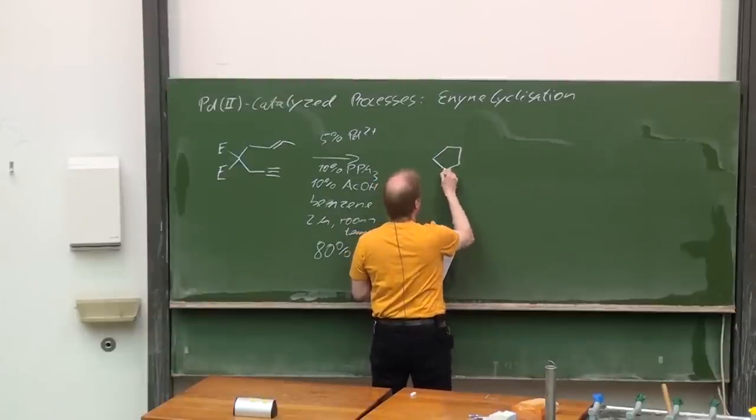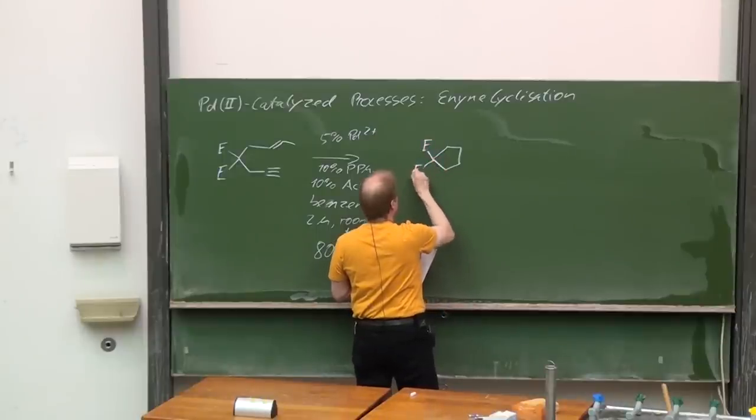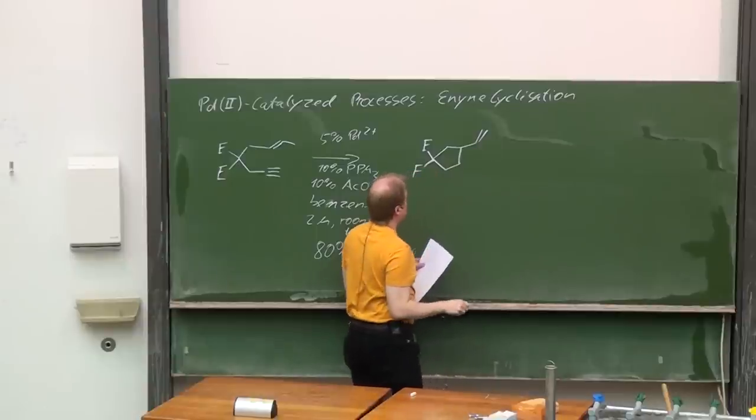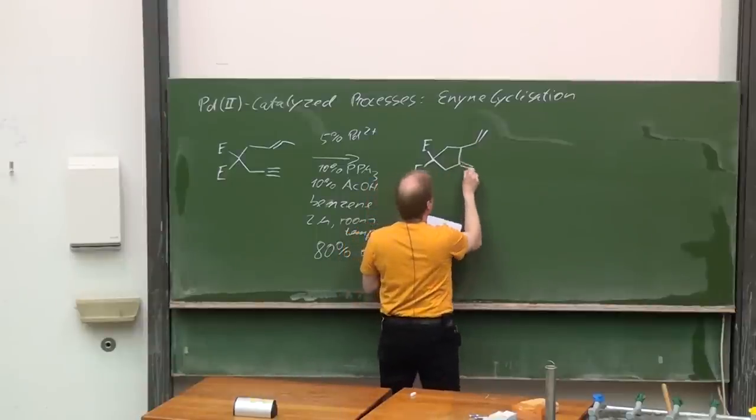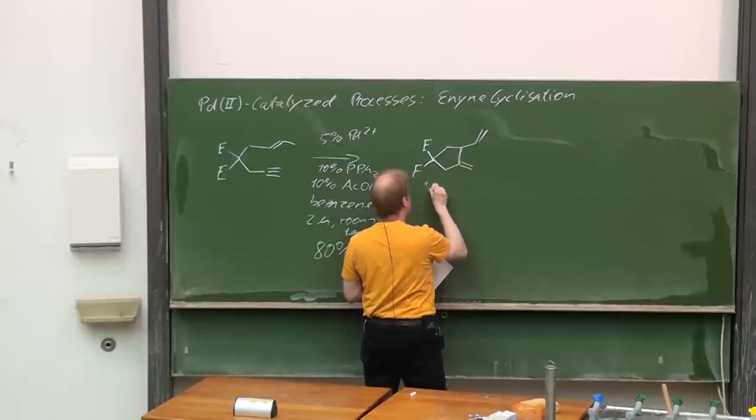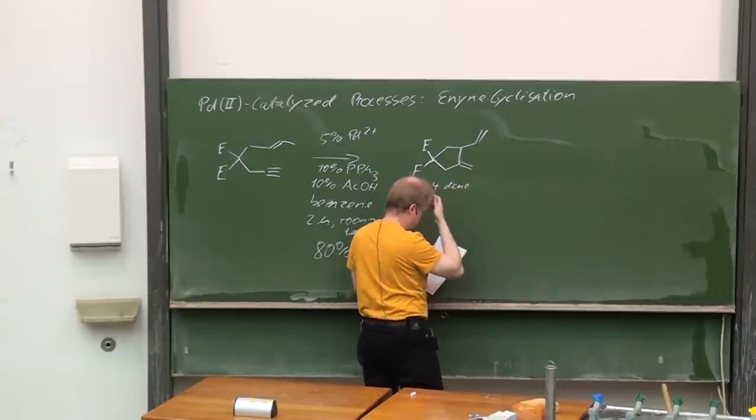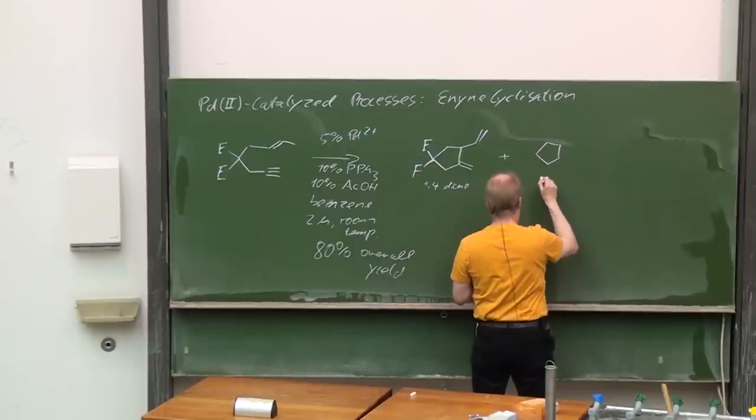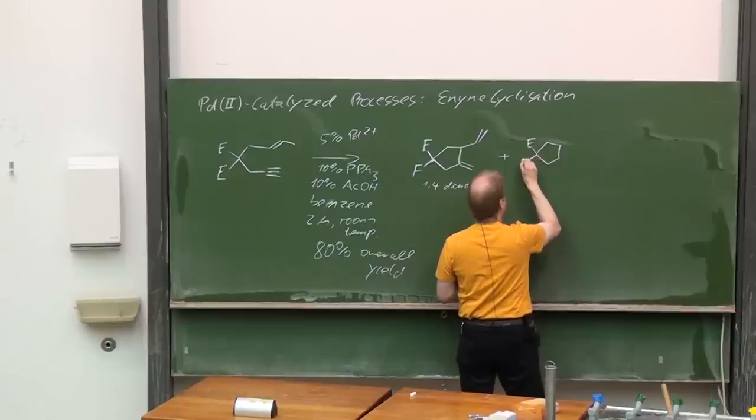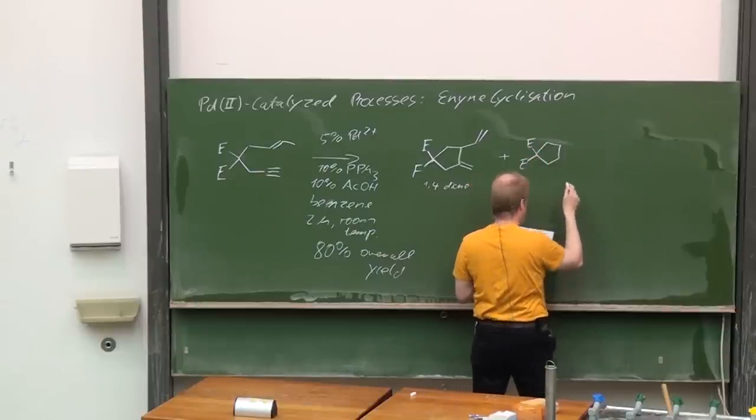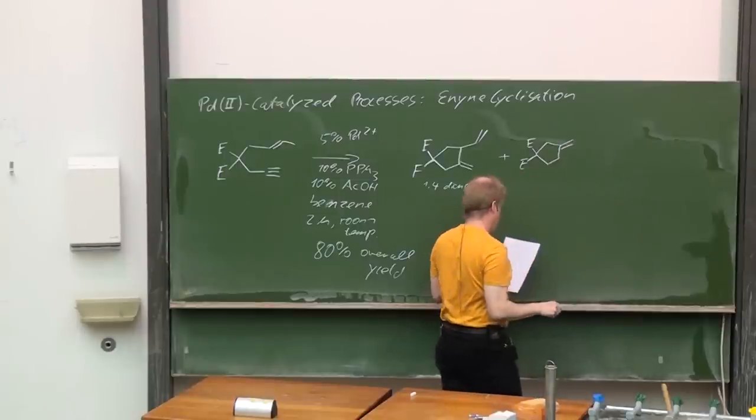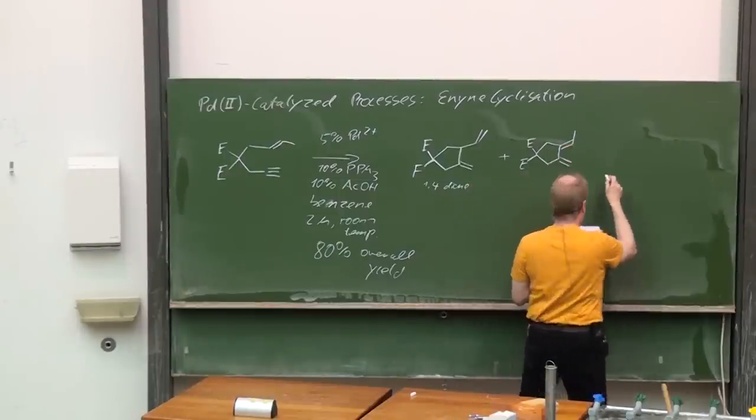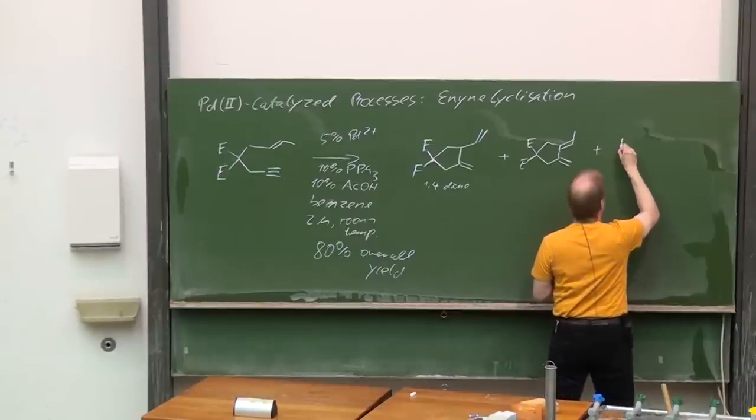The main one had the structure of a 1,4-diene, and the other two isolated and identified products were 1,3-dienes, just the cis and the trans stereoisomer.